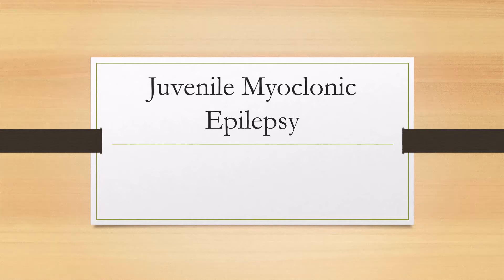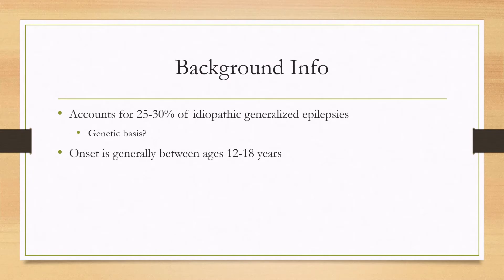Let's talk about juvenile myoclonic epilepsy. This accounts for about 25 to 30 percent of all idiopathic generalized epilepsies and is thought to have a genetic basis, although there is not one single gene that has been shown to lead to this diagnosis — there have been a few associated genes. The onset is generally in the adolescent years between 12 and 18 years old.